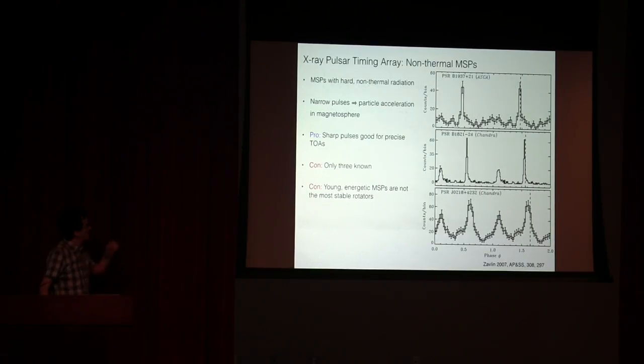So if you're looking at doing an x-ray timing array, the non-thermal pulsars have very sharp profiles that would lend themselves to making this a good observation. But there are only a few of these that are known, and they also tend to be very noisy rotators on their own, so they're just not great objects for timing them in the x-rays.